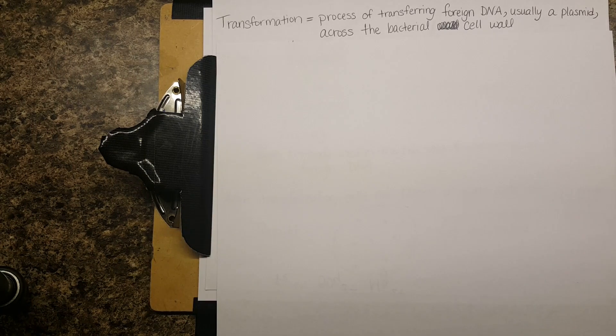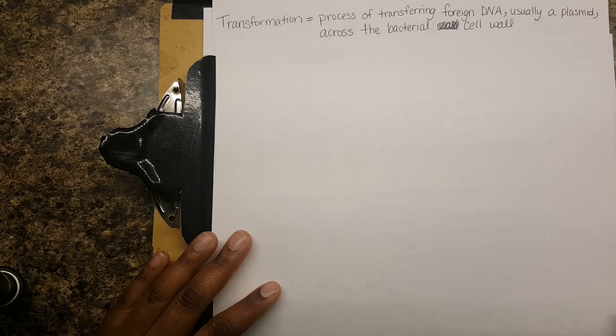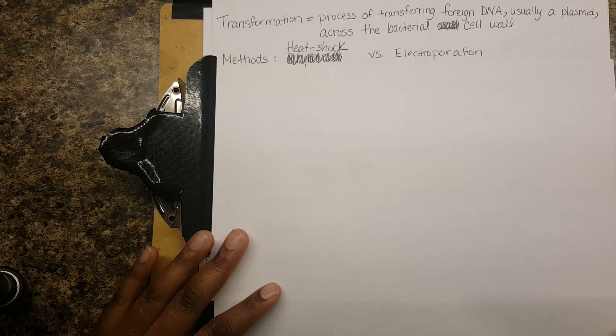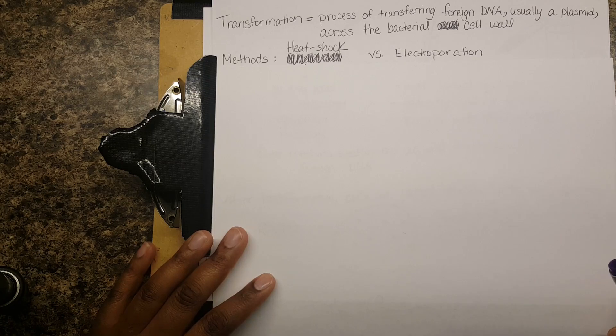The process of taking your foreign DNA — your plasmid — and getting it into the bacteria is called transformation. The formal definition is: the process of transferring foreign DNA, usually a plasmid, across the bacterial cell wall. There are a couple of different methods you can use to do this; the two big ones are heat shock and electroporation.